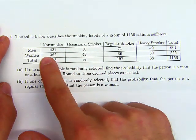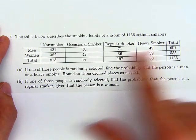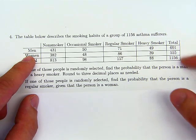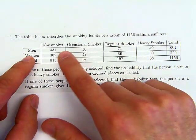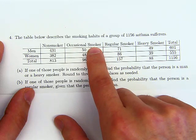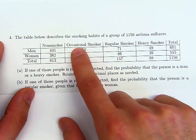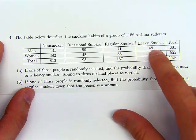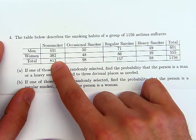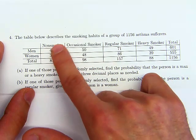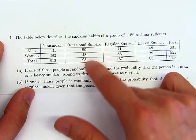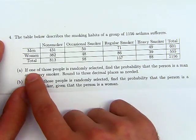In the table, we have 601 men and 555 women, for a total of 1,156 people. Out of the 601 men, 431 are non-smokers, 50 are occasional smokers, 71 are regular smokers, and 49 are heavy smokers. The same data is given for women, along with totals for each smoking category.